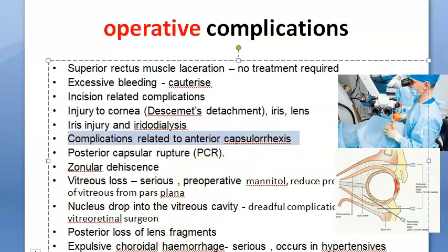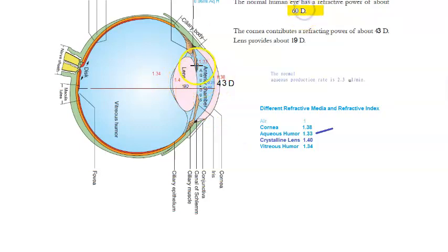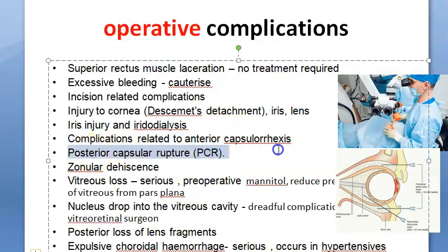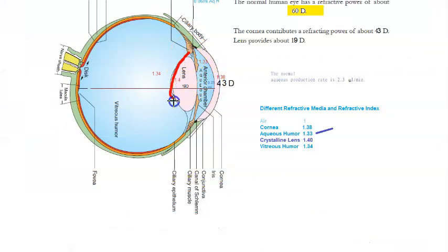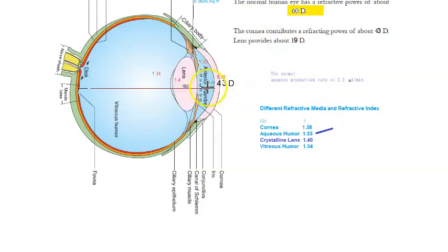Complications related to anterior capsulorrhexis: the lens is inside the lens capsule, which has an anterior and posterior component. The lens content has become opaque — that is the cataract causing defective vision. They want to remove the lens by doing anterior capsulorrhexis — making a hole to remove the content of the lens. During this, complications related to the anterior capsulorrhexis can occur.